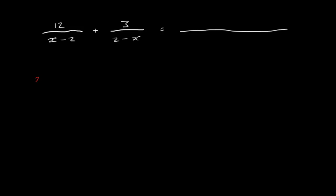Let's look at 2 minus x separately. We can see that x minus 2 with a minus in front of it equals 2 minus x. The minus 1 times x gives minus x, and then minus times minus 2 gives plus 2. So 2 minus x equals minus 1 times x minus 2. These are actually equal — this expression here is exactly the same as this expression here.